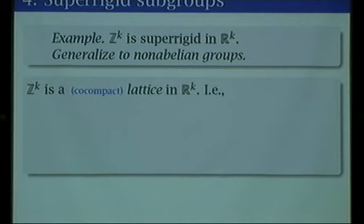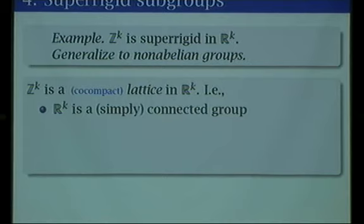The fact that ZK is a lattice in RK means just a few obvious things. First of all, RK is a group, but also it's a topological space. As a topological space, it's simply connected. So it's a group — we're talking in group theory — but as a topological space, it's simply connected. That's what a Lie group is.